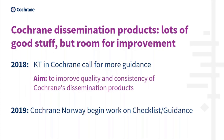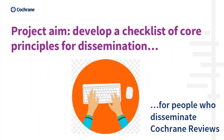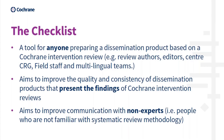In the very many types of products we make, there is a lot of good stuff that does achieve these goals, but there is certainly room for improvement. For this reason, last year Cochrane called for more guidance on these issues, so the aim was to improve the quality and the consistency of our products. In the beginning of this year we started working on the checklist and guidance, and we've now recently finished this guidance. So the aim of the project is to develop a checklist of core principles for dissemination for anyone disseminating Cochrane reviews. This tool is for anybody — a review author, an editor, a center staff member, a member of a CRG or field, or a multilingual team, or somebody outside of Cochrane. But the aim is the same: to improve the quality and the consistency of your product when presenting the findings of a review.